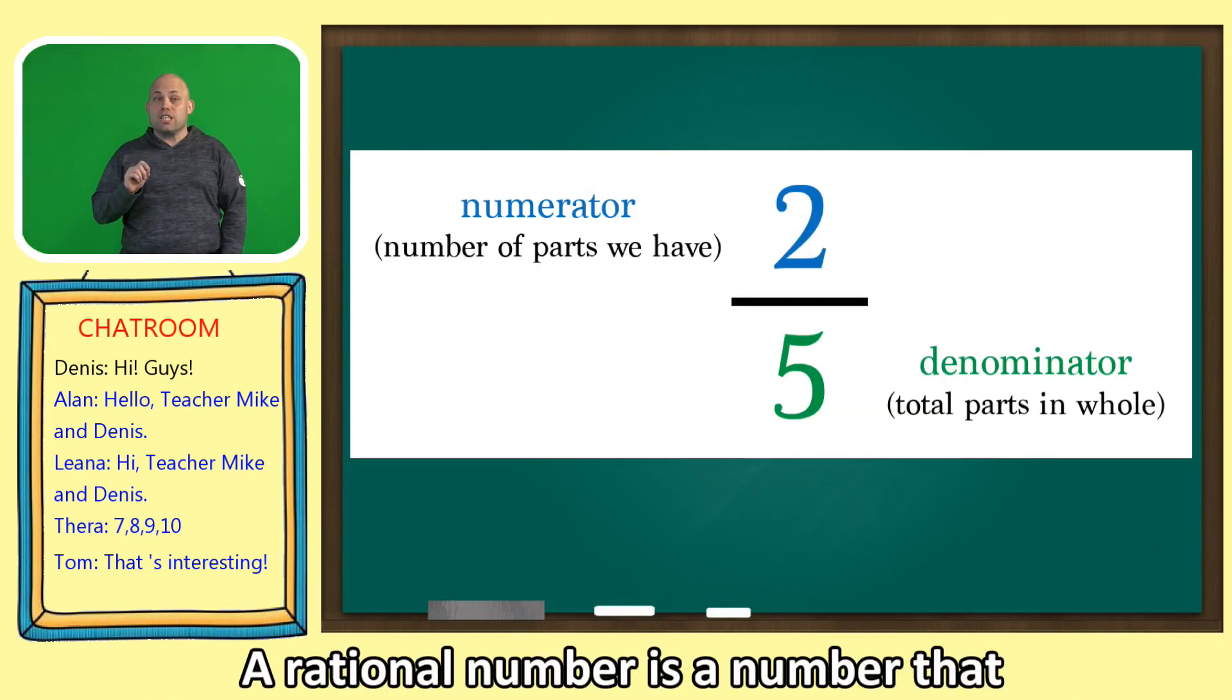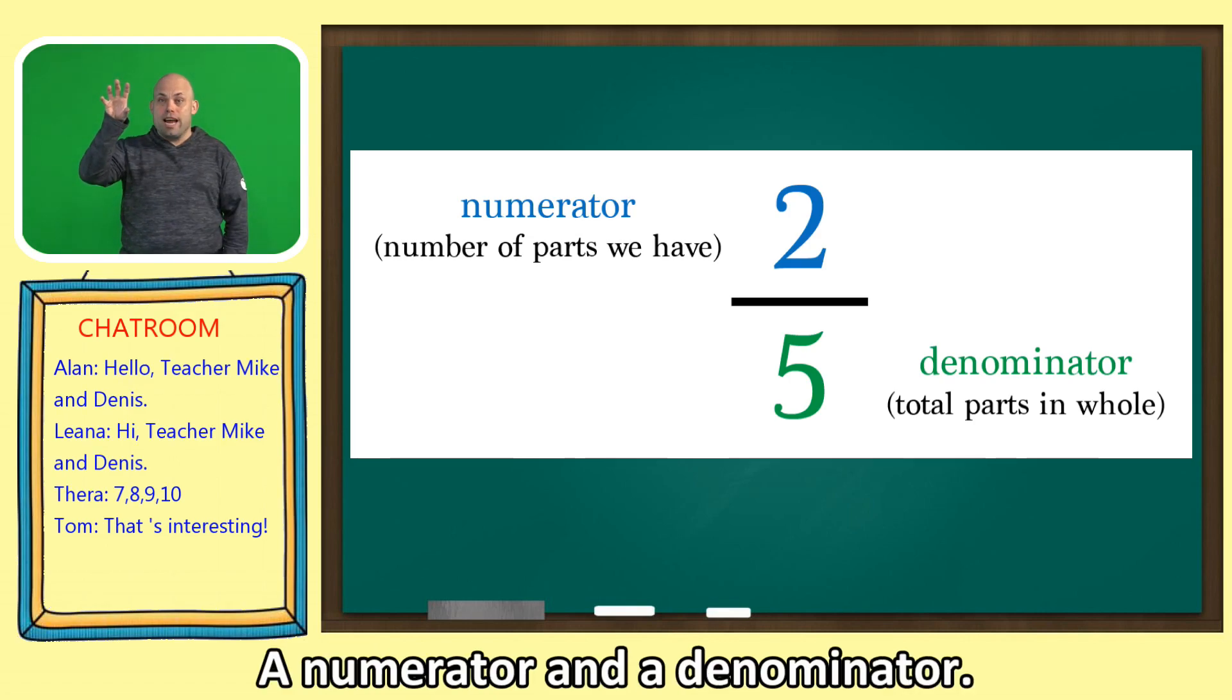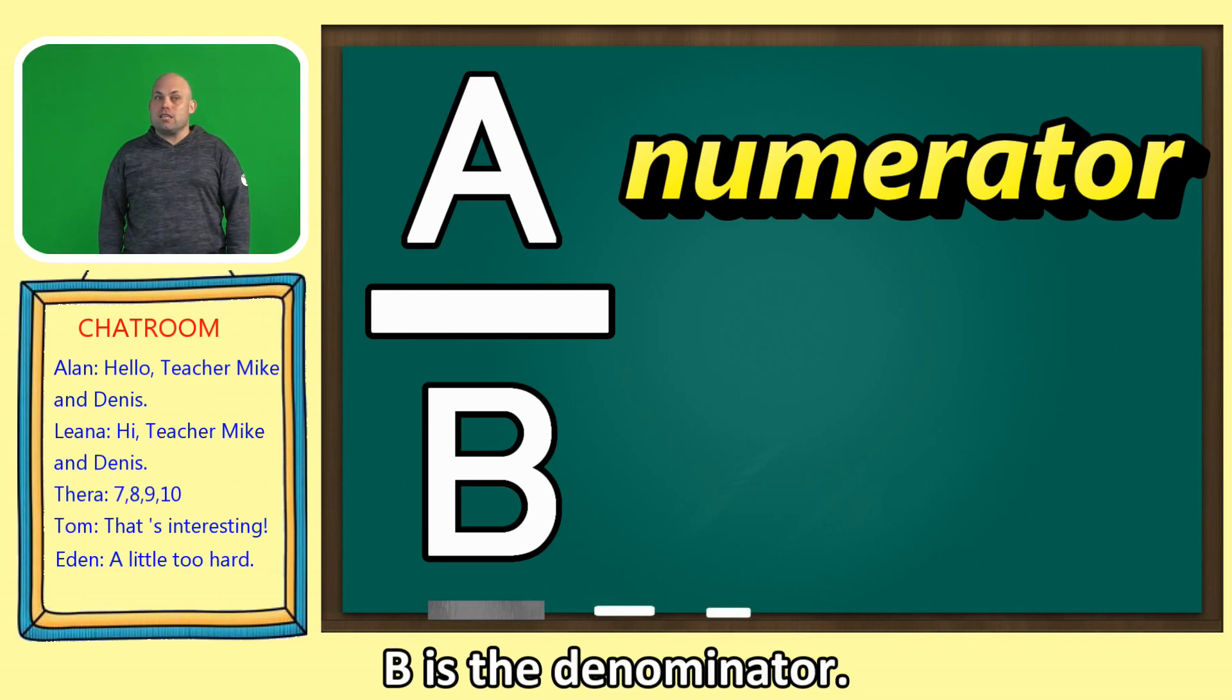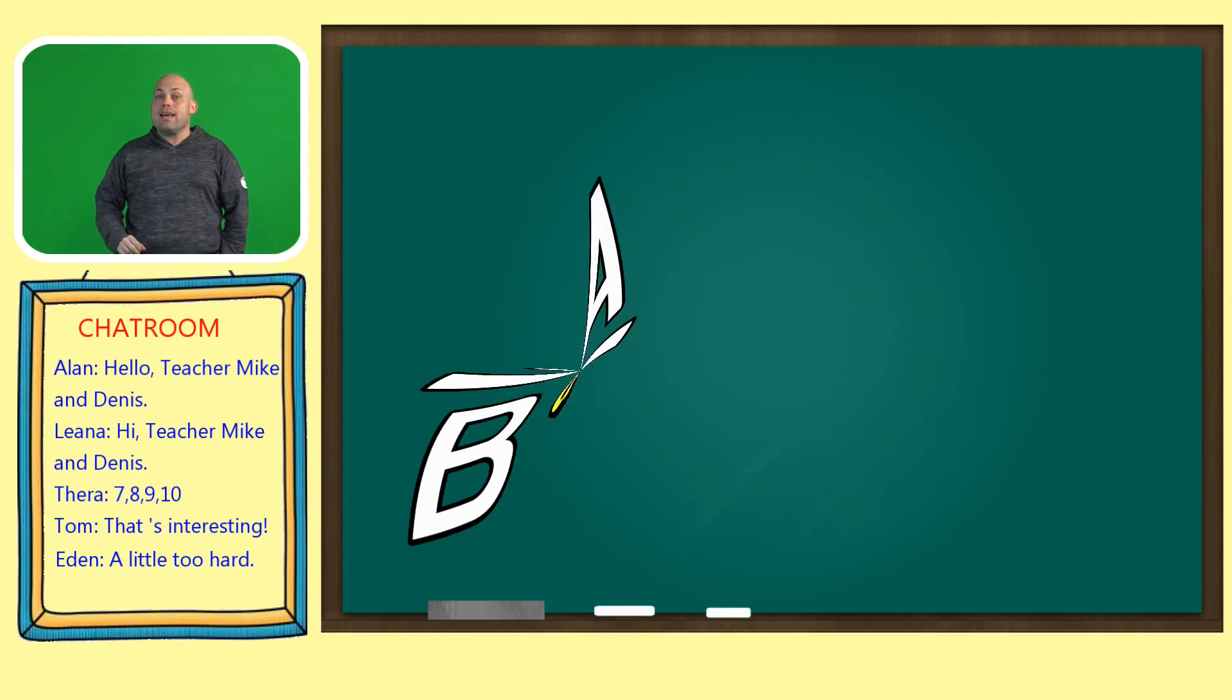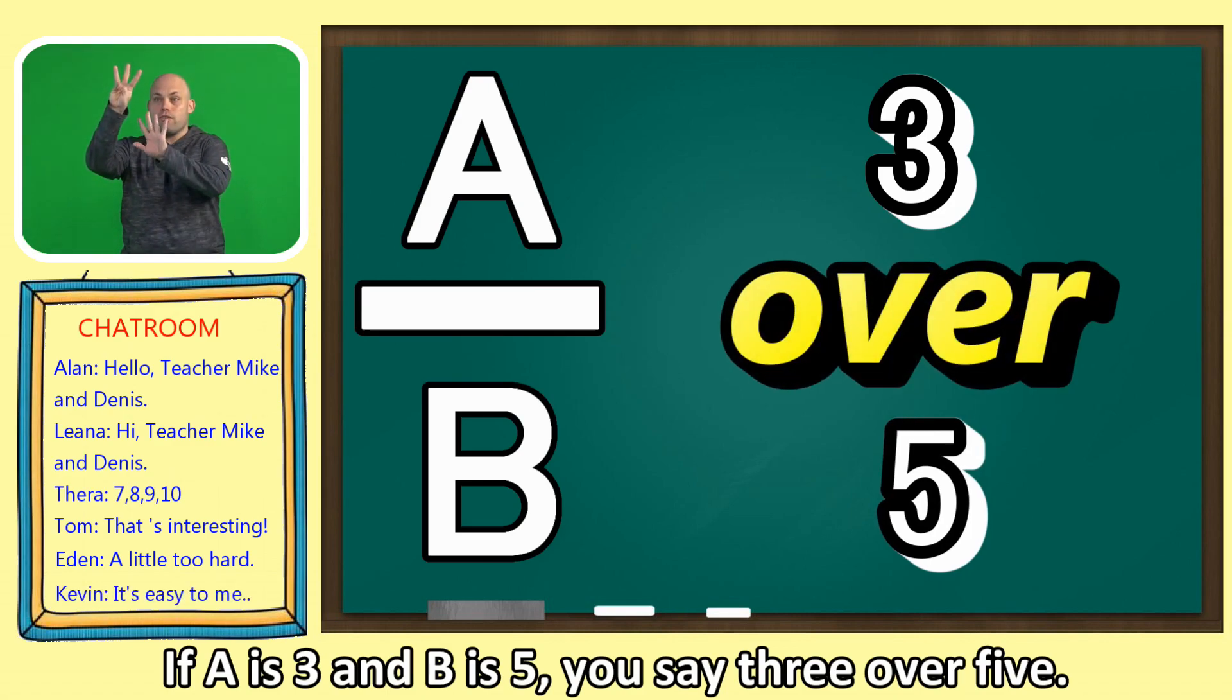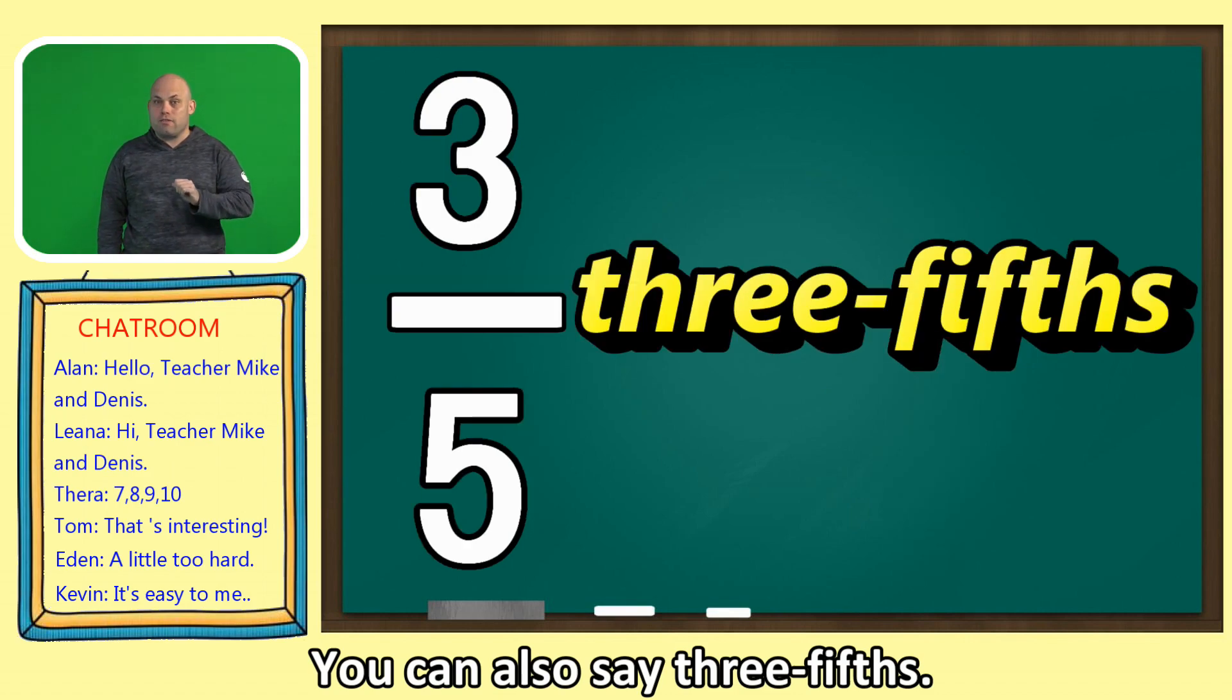A rational number is a number that is written as a fraction, a numerator and a denominator. A is the numerator. B is the denominator. You say A over B. If A is 3 and B is 5, you say 3 over 5. You can also say 3 fifths.